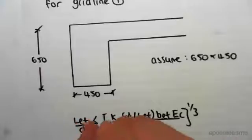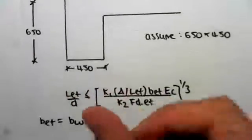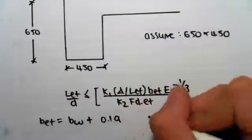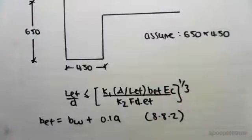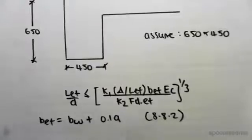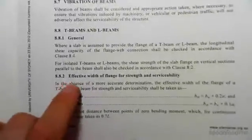The effective width for an L section is given as the width of the web plus 0.1a, and that's from section 8.8.2. If I find that for you just quickly, section 8.8.2, we have the effective width.